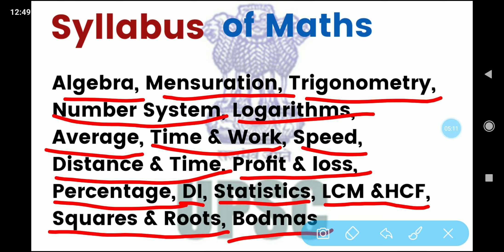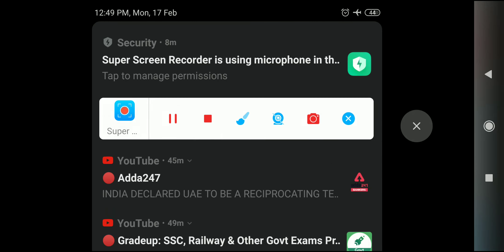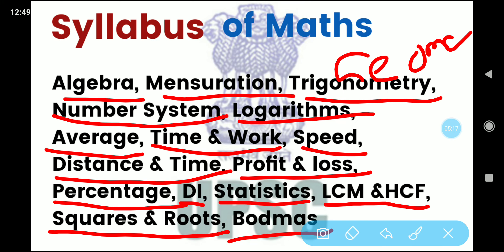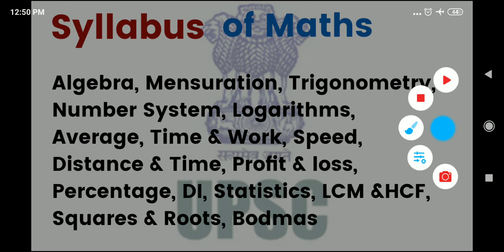There is one topic that is missing from the list, which is Geometry. Geometry is about figures like Trapezium, Rectangles, and Circles. So these are the complete syllabuses of the three papers which are asked in the CDS examination.